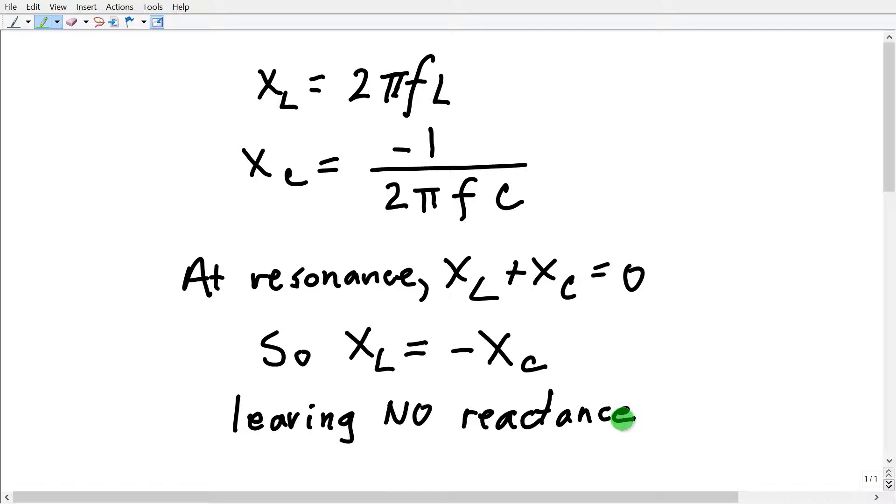So your net reactance is zero. Now that is different than just a plain old ordinary resistor which never has any reactance at any frequency. When you have a coil and a capacitor, either in series or in parallel,